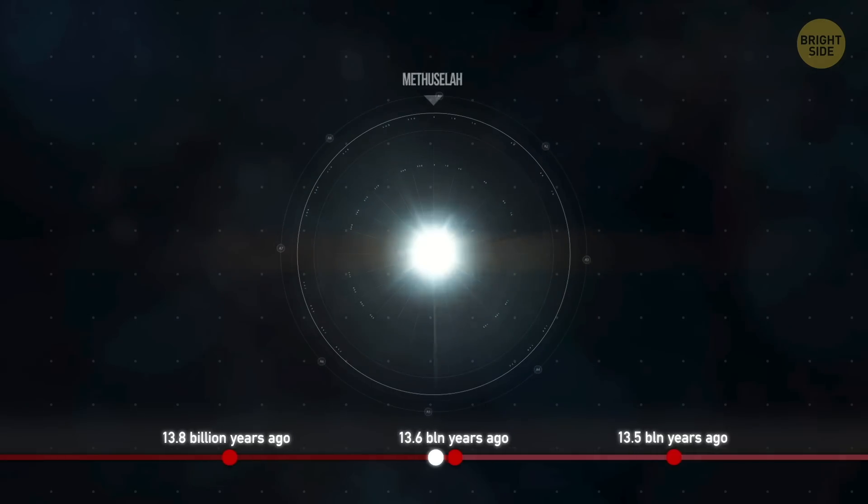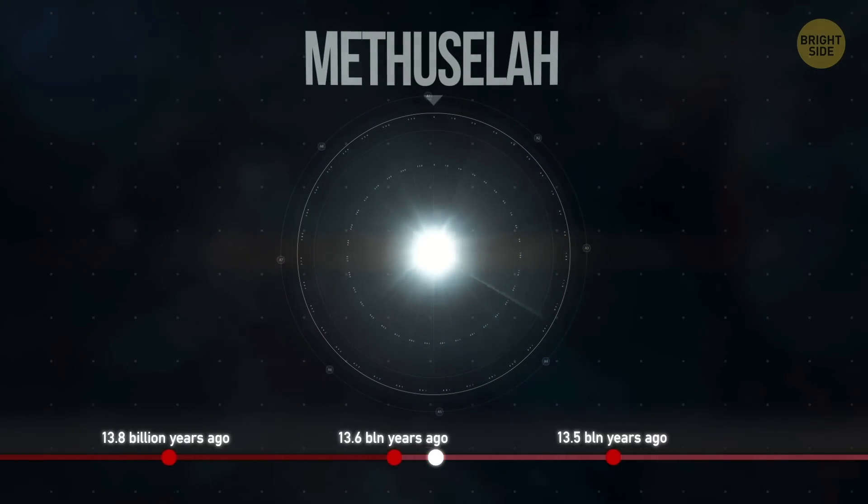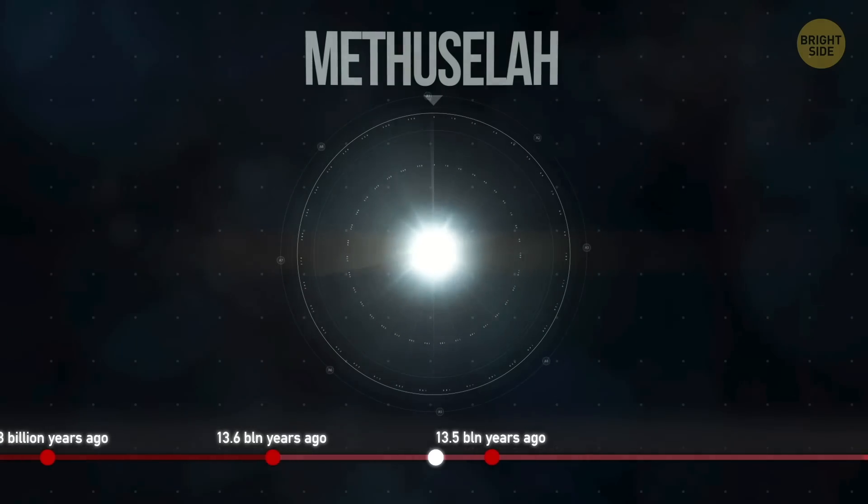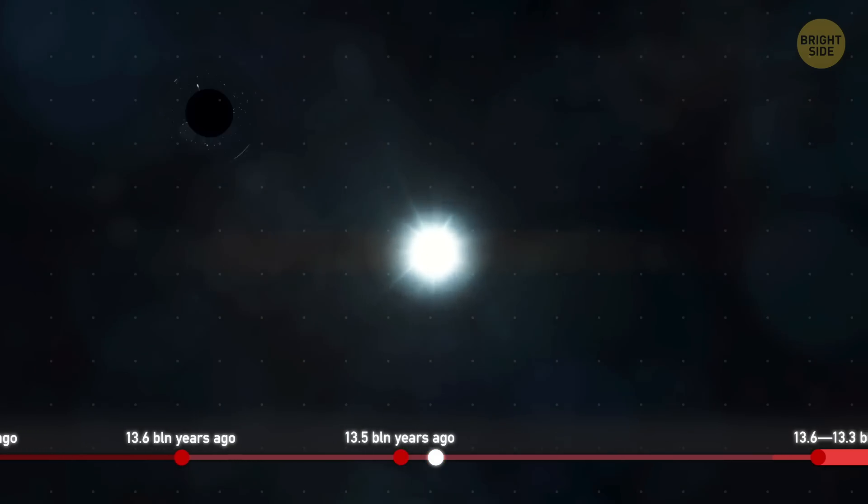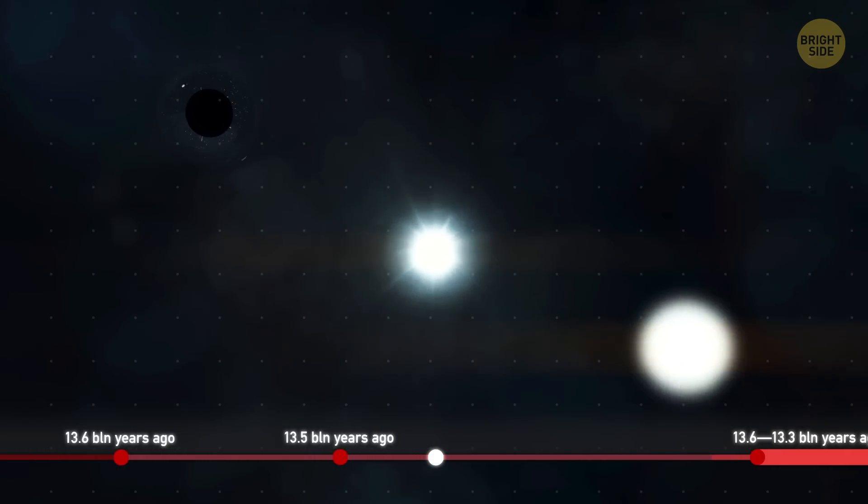Its name was Methuselah, and for a long time it confused astronomers who believed it might be older than the universe itself. Soon after, on a cosmic scale of course, the first black holes started forming.